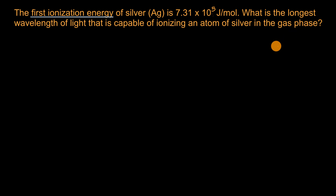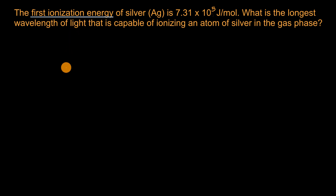Before I ask you to pause and try to do this on your own, let's remind ourselves what first ionization energy even is. This is the energy required to get the highest energy or outermost electron to escape from the atom — not just go to a higher energy level, but completely escape. You could view that as the infinite energy level.